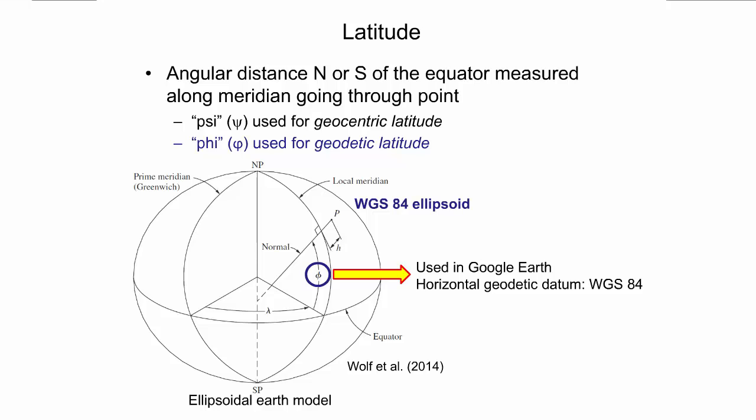A horizontal geodetic datum defines the relationship between the ellipsoid adopted as the model of the Earth's shape and the Earth itself. Using a geodetic datum, a physical point on or near the Earth's surface gets a unique set of coordinates. Google adopts the World Geodetic System 1984 datum, or WGS84 for short. The ellipsoid associated with this datum is called the WGS84 ellipsoid.